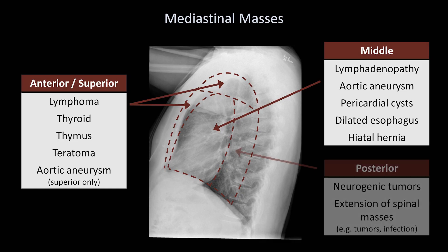Finally, the posterior mediastinum includes everything behind those structures, which ends up being largely just a perivertebral space. Thus, the differential diagnosis of masses located here includes neurogenic tumors and extension of spinal masses such as tumors and infections.